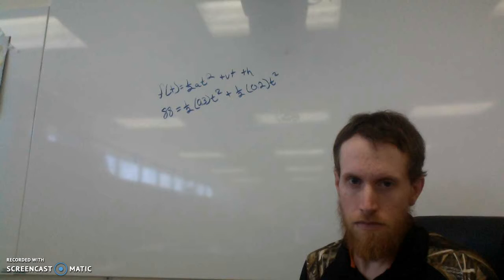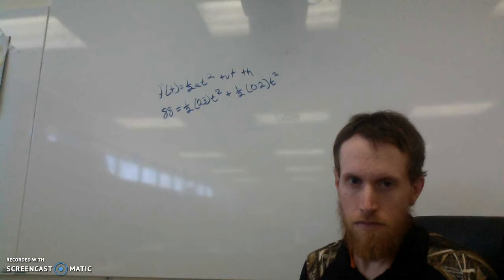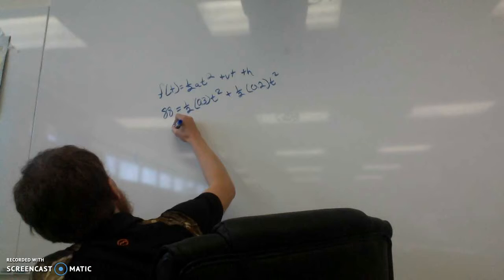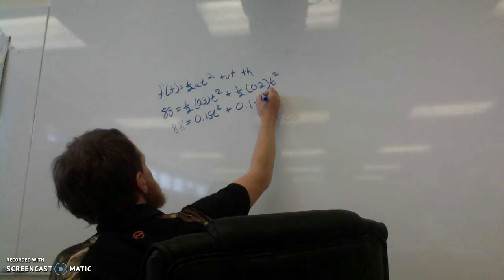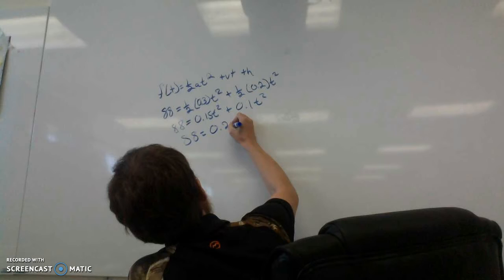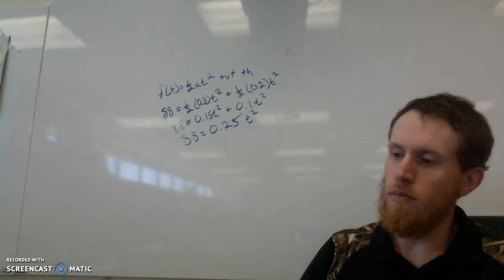So George and Alfred together are going to cover 88. So 88 equals 0.15 t squared plus 0.1 t squared. So then 88 equals 0.25 t squared. We can divide both sides by 0.25.